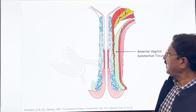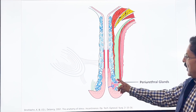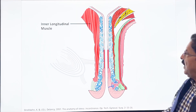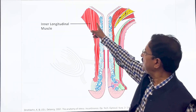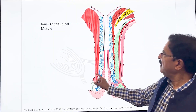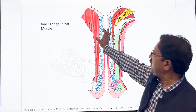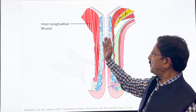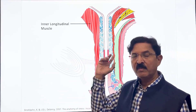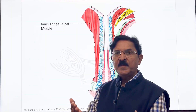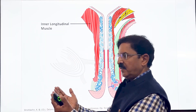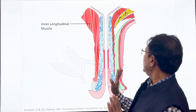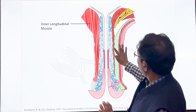Looking further, you will see the periurethral glands, which are located at this location. Anteriorly, the first layer is the inner longitudinal muscle, which is thicker toward the bladder neck and becomes thinner and thinner as you come down. This muscle is present anteriorly — a lot of bulk is present anteriorly — and when it reaches the midline posteriorly, it is attached to the raffae.